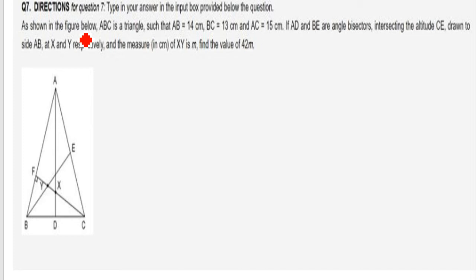As shown in the figure, ABC is a triangle such that AB is 14 cm, BC is 13 cm, AC is 15 cm. Note down the data, create a figure of ABC only, just create a triangle nothing else. I would say just create a triangle ABC.